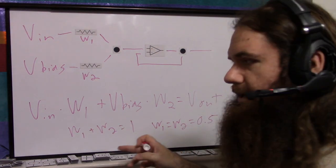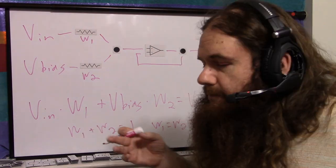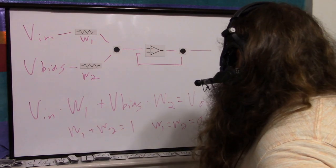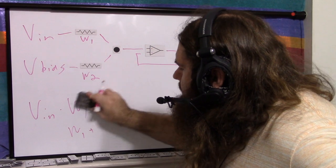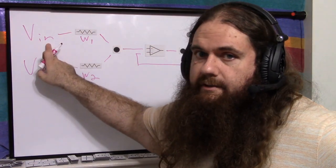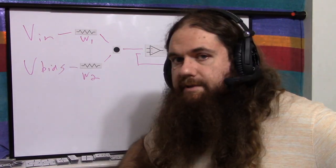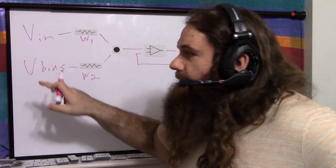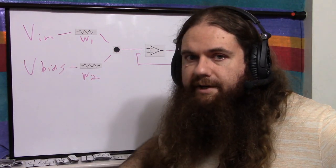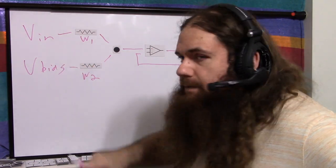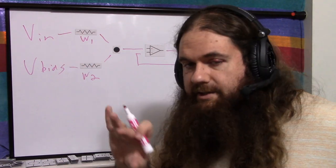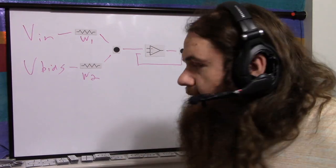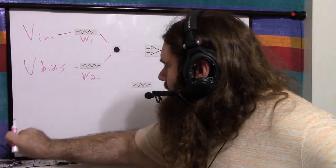But because of this 0.5, because we're kind of averaging, we think of it as summing but we're kind of averaging, we need to actually apply a gain of two. Because if voltage in is five volts and voltage bias is five volts, we would expect them to add to 10 volts, but they're each being multiplied by 0.5. So you get 2.5 plus 2.5 is five. So it's correct, it's just half the size. So instead of unity gain, we just want to double it.